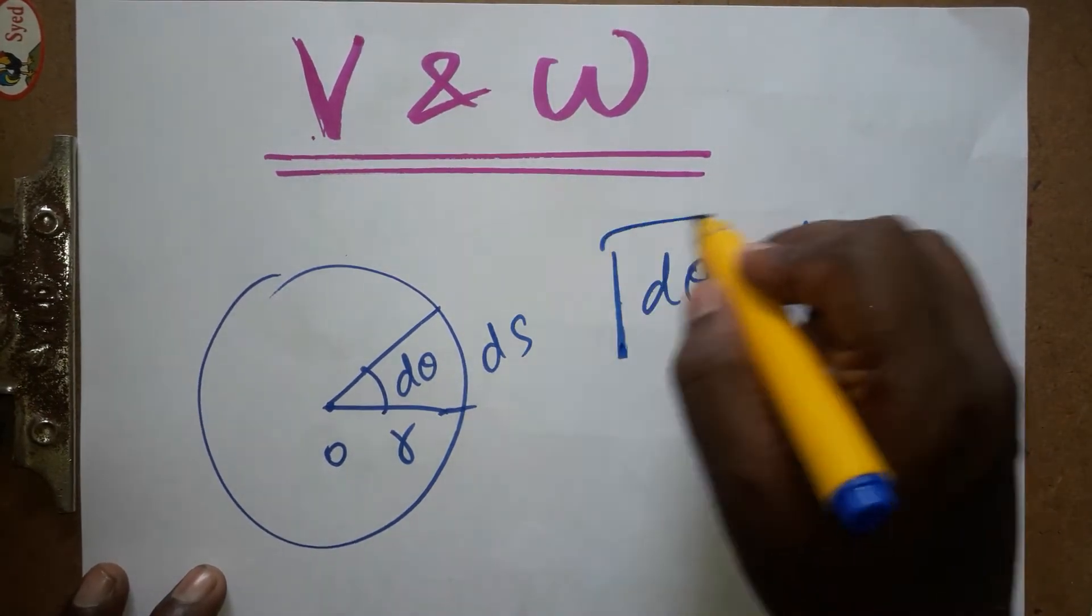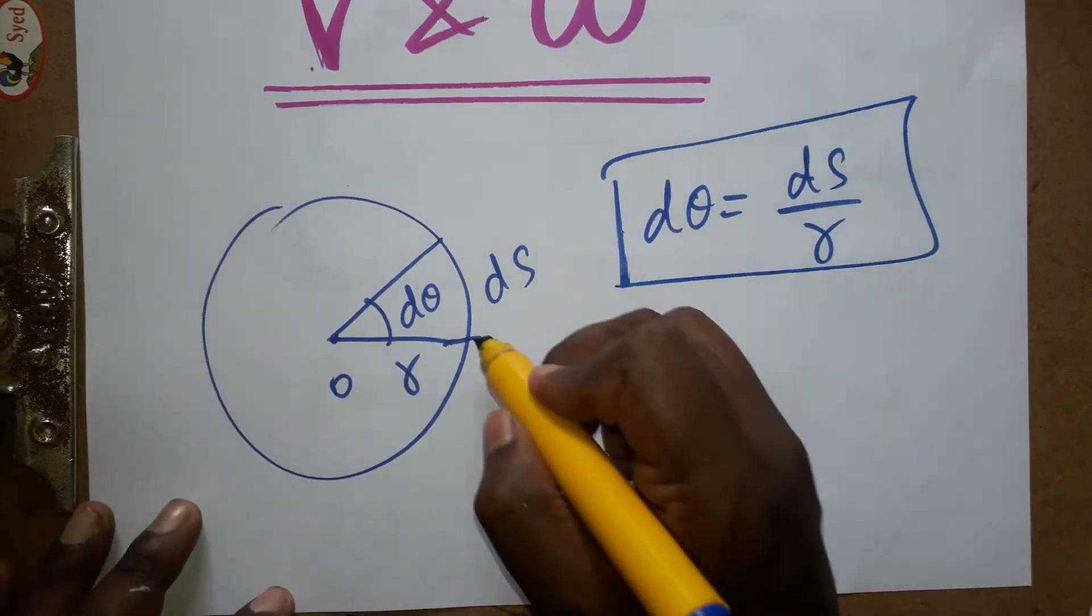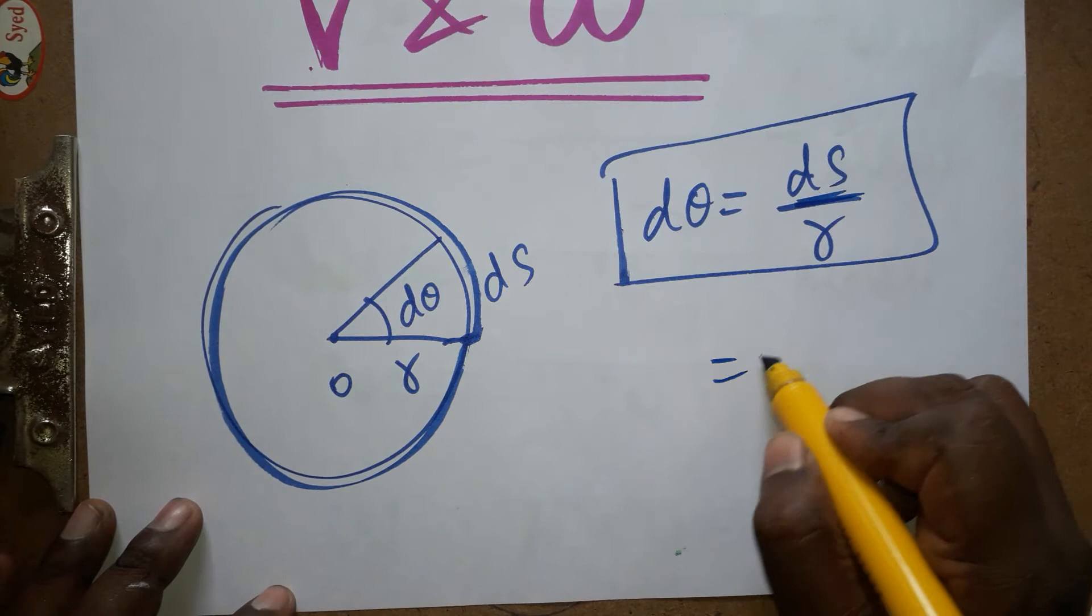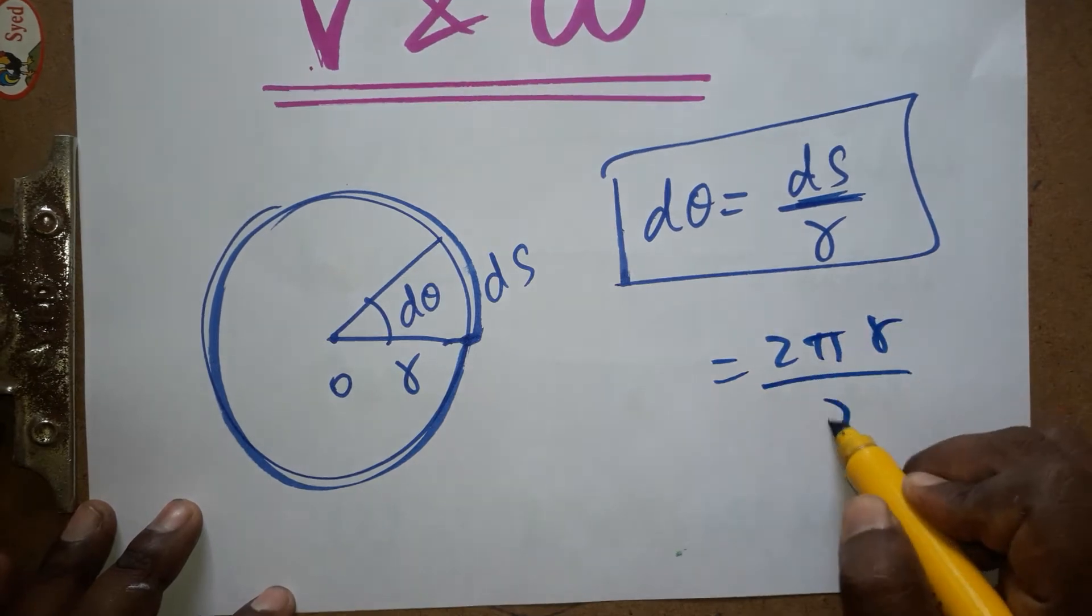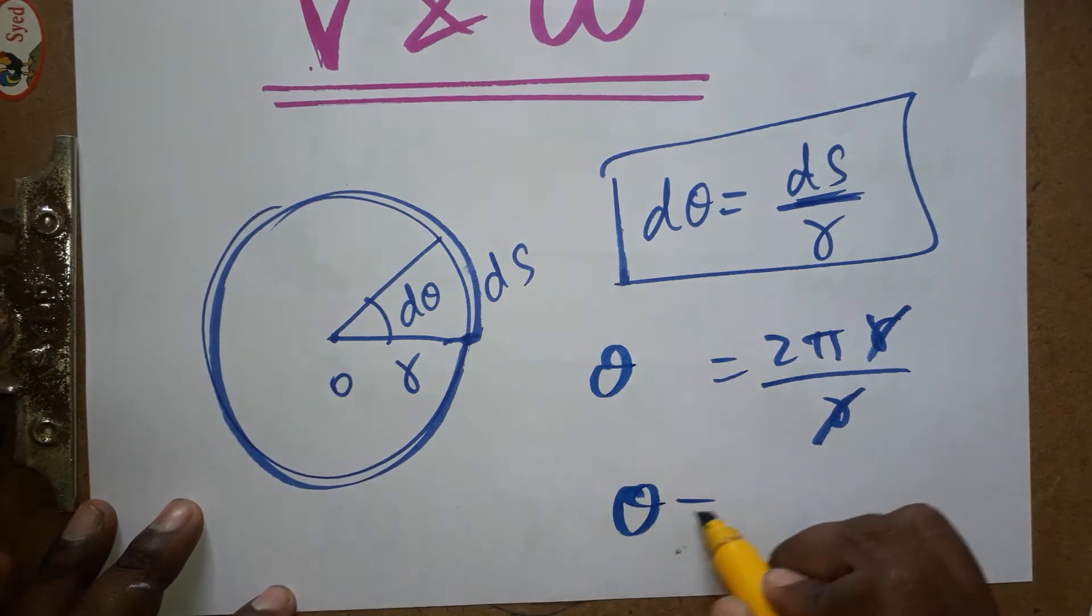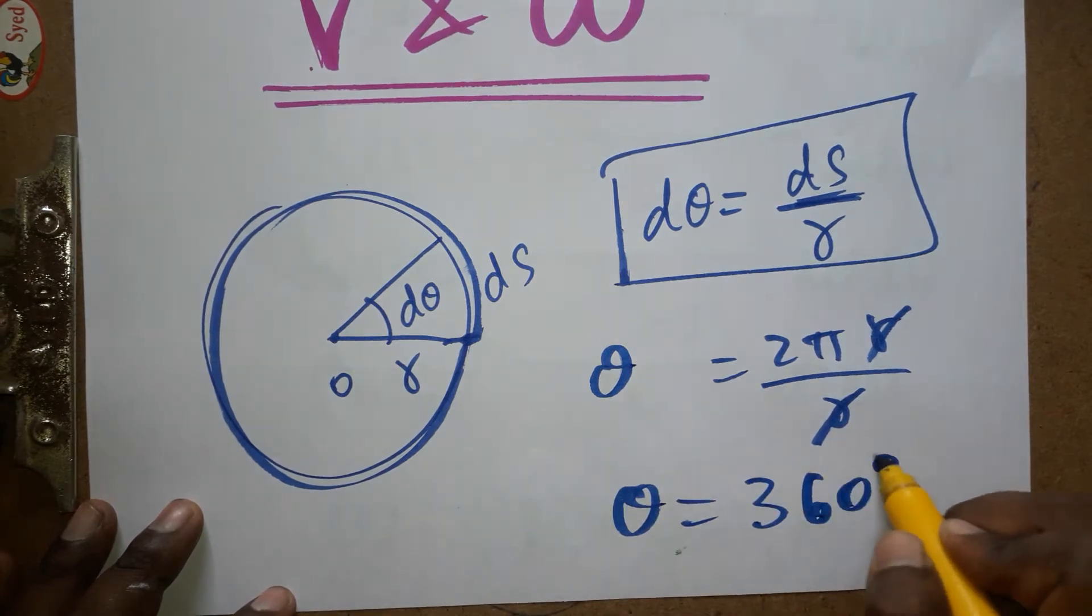You can ask me one question: how is this equation satisfied when the object is covering a full circle? The arc length is going to be 2πr divided by r, which is 2π. The θ is going to be a full θ, that is 360 degrees. 2π represents 360 degrees.